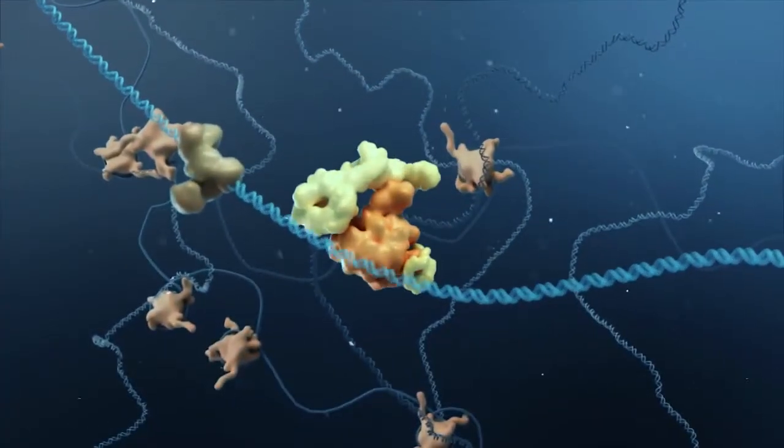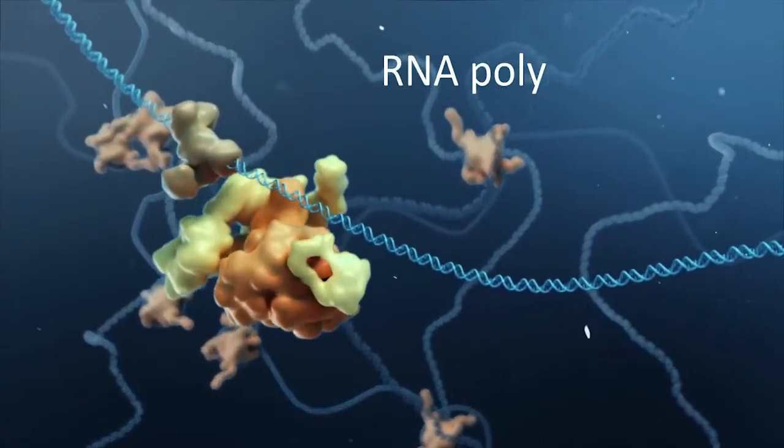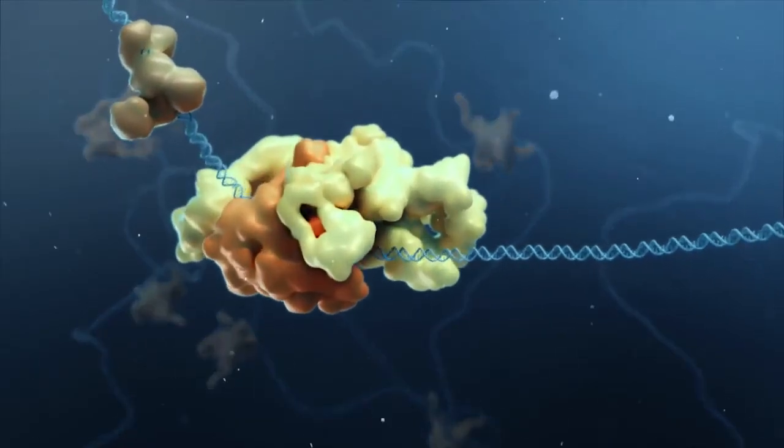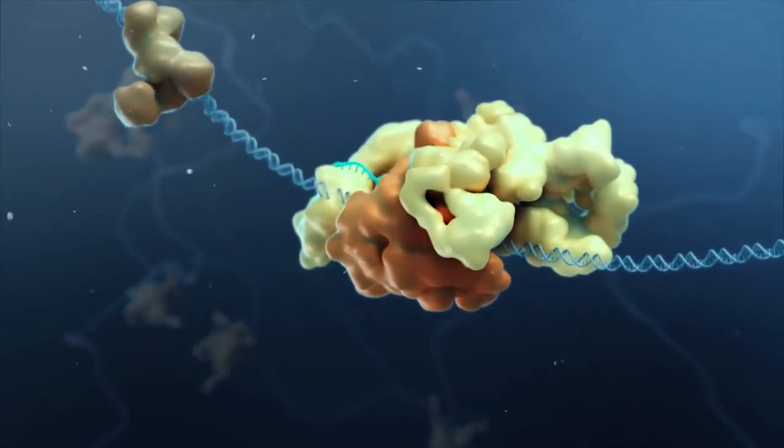Transcription begins when the enzyme RNA polymerase 2, known as POL2, is recruited to an available gene by initiation proteins, where it pauses at the transcription start site.